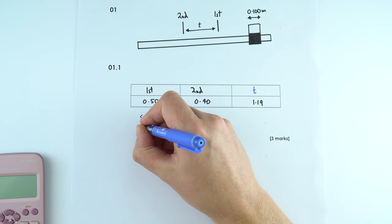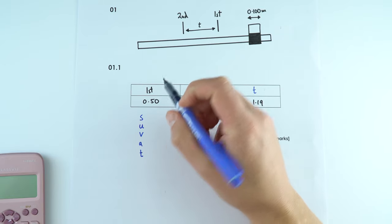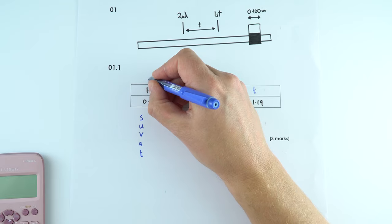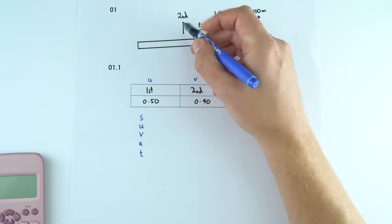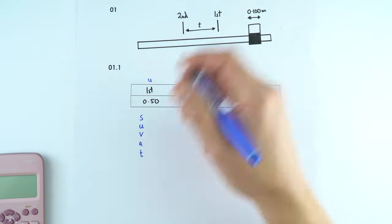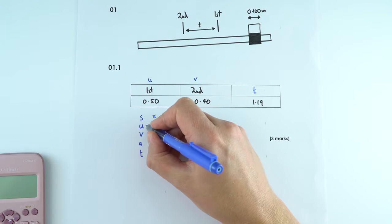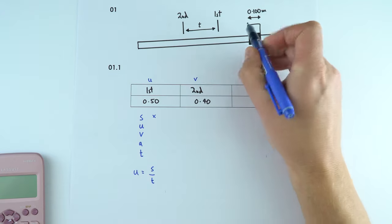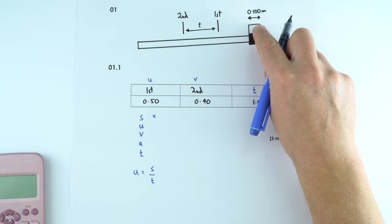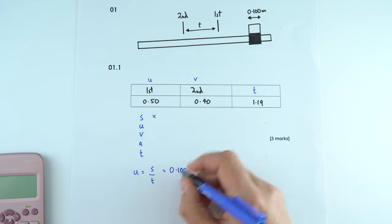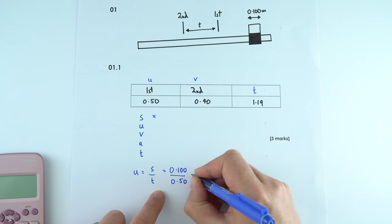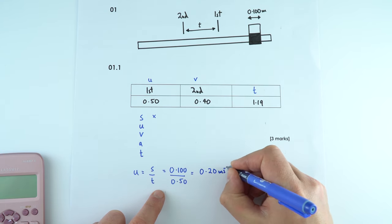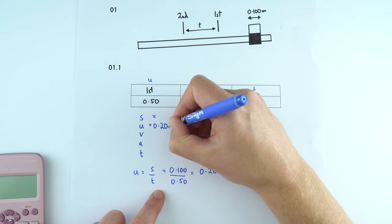This uses a SUVAT equation, so we write down S, U, V, A and T. We can work out the initial velocity because we know the time it was at the first light gate. The displacement of the card was 0.100 metres, and the time was 0.50 seconds. So U = 0.1 divided by 0.5 = 0.20 metres per second.